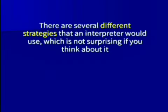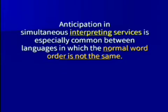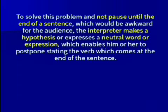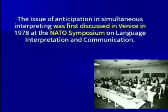There are several different strategies that an interpreter would use. Anticipation in simultaneous interpreting is especially common between languages where the normal word order is not the same. For example, in English or French, word order is subject plus verb plus object, whereas in German it is subject plus object plus verb. To solve this problem and avoid pausing until the end of the sentence, the interpreter makes a hypothesis and chooses a neutral word to break the pause.